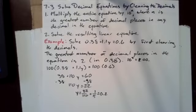So 10 squared is 100. 100 times 0.38 plus 1.1y is equal to 100 times 0.6. 38 plus 110y equals 60. Subtract 38 from both sides to get 110y equals 22.